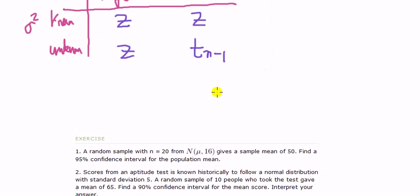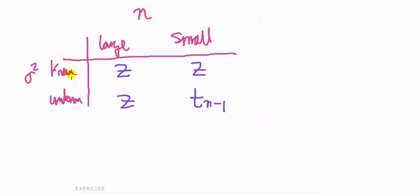So, we know that we are here. Population variance known, so we're going to use z table. Specifically, since n is 10, it's small. Variance known, n is small. So, we're right in this cell, z.